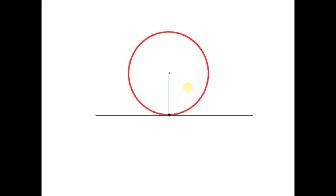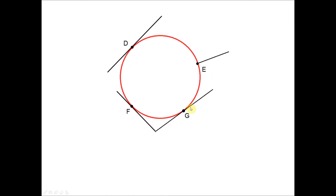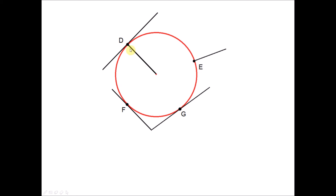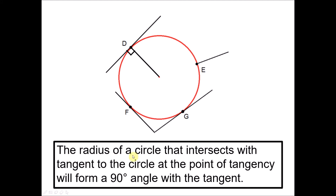Now we look at other properties of the tangent. If we draw a radius from the center of the circle to the point of tangency, when we measure the angle formed between the radius and the tangent, we find that it is always 90 degrees — no matter where the position is. Taking the circle from Example 2, since we identified that the straight line is a tangent, if I draw a radius from the point of tangency and measure the angle, it is also 90 degrees. The same applies for points F and G. We can conclude that the radius of the circle that intersects with a tangent, at the point of tangency, forms a 90-degree angle with the tangent.